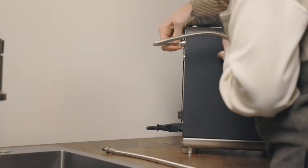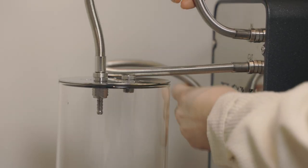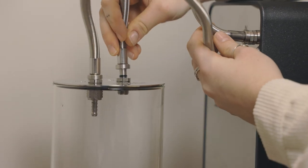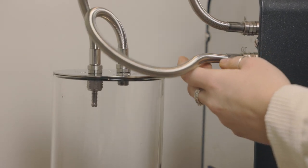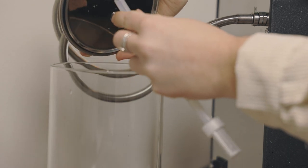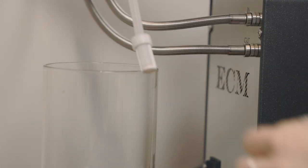Attach the connecting hoses to the back of the machine. Put the other end of the connecting hoses through the corresponding holes of the water tank lid. Attach the silicone hose on the inside of the water tank lid.